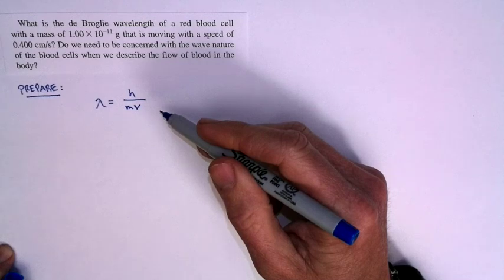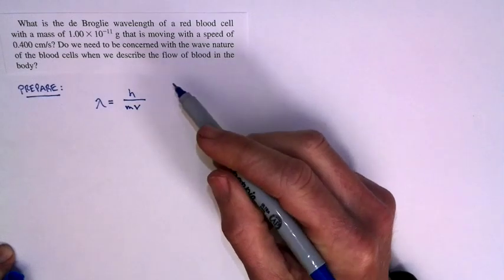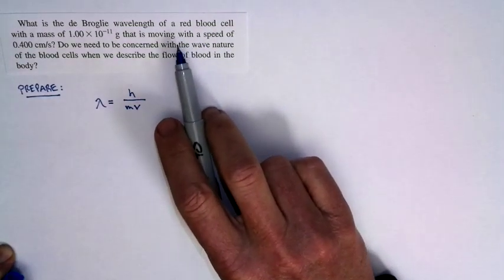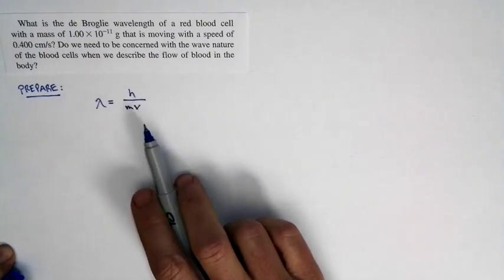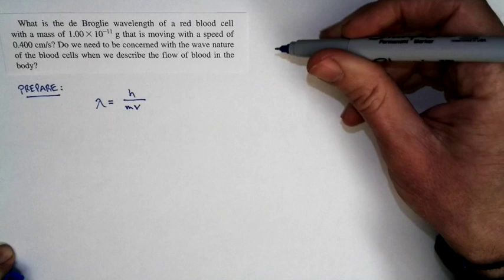But how about for something that's a bit bigger, something that's still microscopic, a red blood cell? Would the wave nature make a difference? Would it be detectable for something that size?